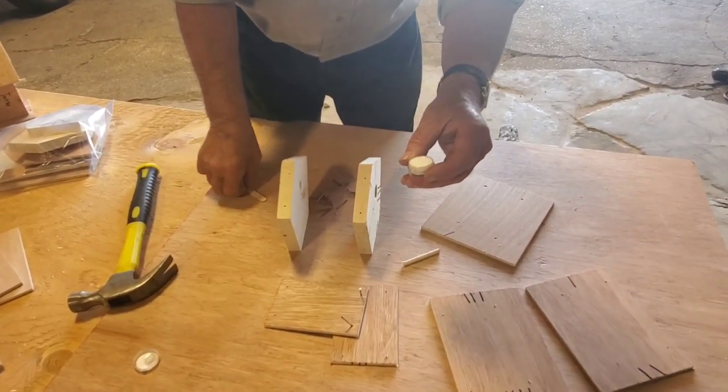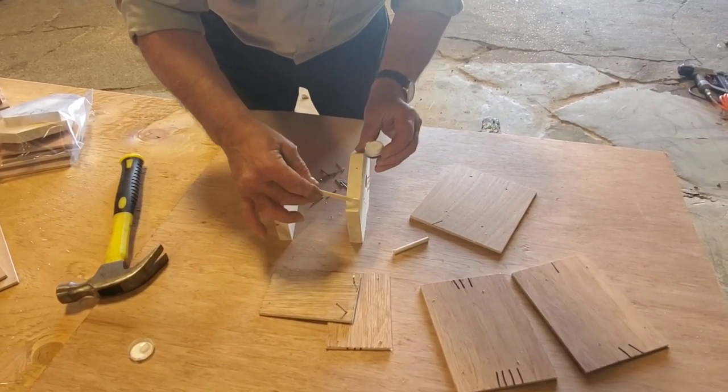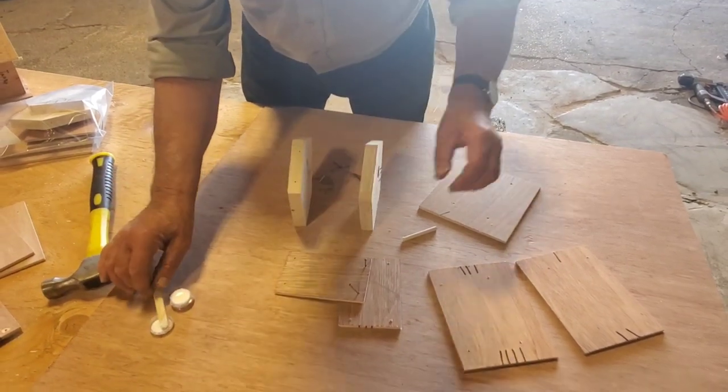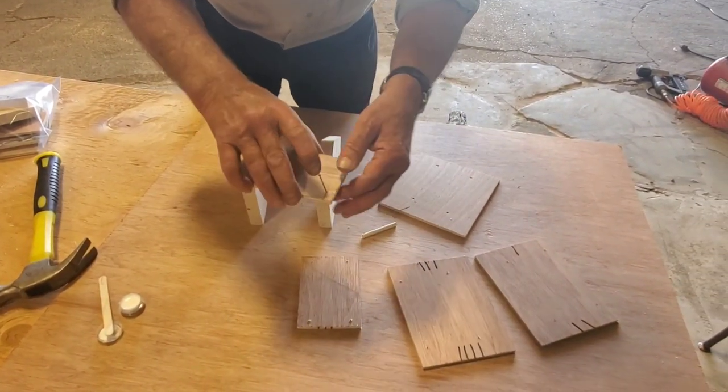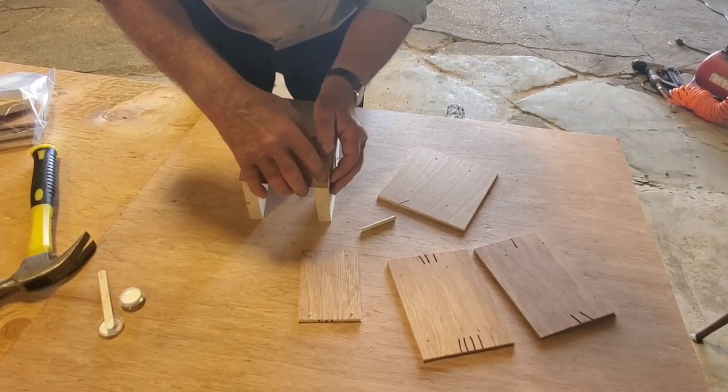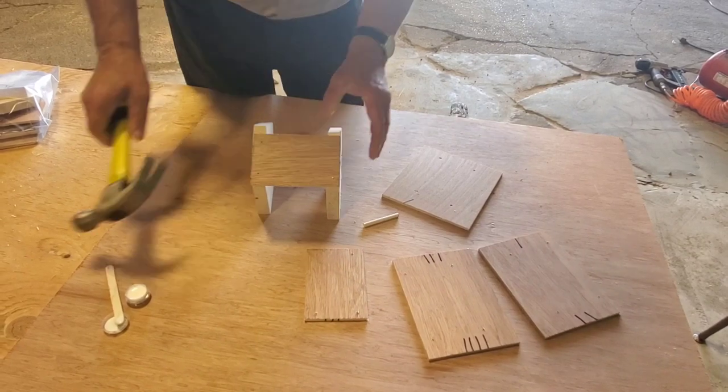Then you're going to take some glue and put it on the side, like that. Sit the glue down. Take your piece that you put the nails in, and they're going to line up with those holes in that end plate. Then you're going to drive them in.